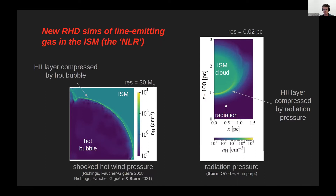The point is to make predictions for emission line spectra under each feedback scenario and then compare these emission lines to observations. That will allow us to constrain what is the dominant feedback mechanism. The emission line region reacts very differently in each case.